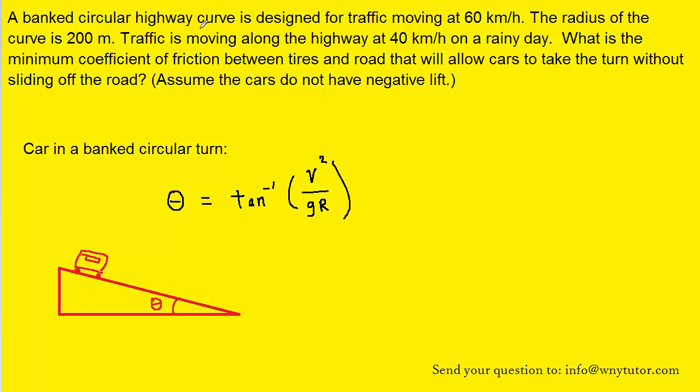The question mentions that the banked circular highway curve is designed for traffic moving at 60 kilometers per hour. What we want to do first is change that speed into meters per second. That's a pretty easy conversion. Once you simplify that, you get approximately 16.7 meters per second.